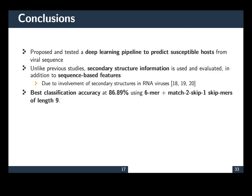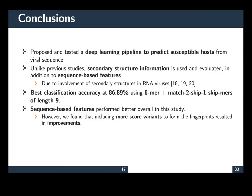The best classification accuracy that we obtained was 86.9%, and this was when using 6-mer plus match 2, skip 1, skip-mers of length 9. In this study, the sequence-based features were the ones that performed best. But we believe that through combining different statistics from free energy, as well as our new concept of Global Local Secondary Structure Fingerprint, we can further improve this work.